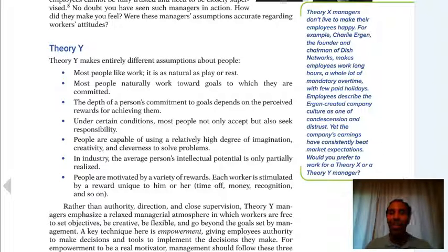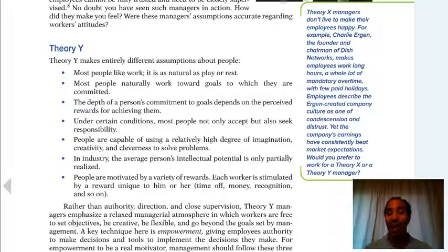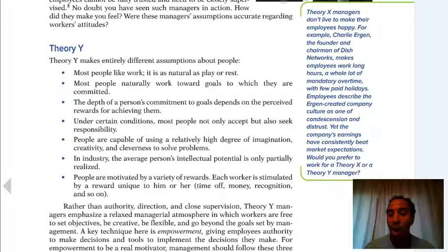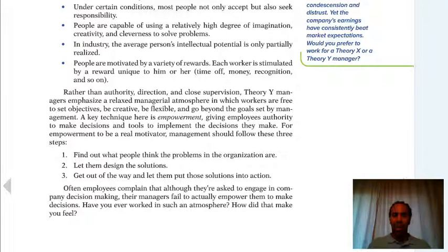Theory Y makes entirely different assumptions about people. Most people like work — it's as natural as rest or play. Most people naturally work towards goals to which they are committed. Under certain conditions, most people not only accept but also seek responsibility. People are capable of using imagination, creativity, and cleverness to solve problems. The average person's intellectual potential is only partially realized. People are motivated by a variety of rewards unique to each person — such as time off, money, or recognition. Time off may be more important to some, money to others, recognition to others still.